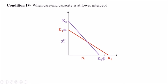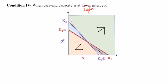In the last condition, when both carrying capacities are at the higher intercept, we again have four areas. Area one: both increase. Area two: both decrease. In area three, the region is above the isocline of species one and below the isocline of species two, so species two increases. In area four, below species one's isocline, species one survives while species two does not. So either species will go extinct depending on the alpha and beta factors. This completes the Lotka-Volterra competition model.